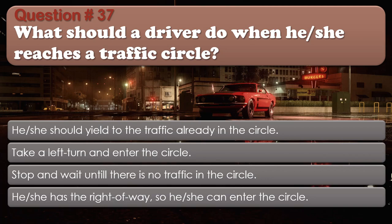Question number 37. What should a driver do when he or she reaches a traffic circle? He or she should yield to the traffic already in the circle. Take a left turn and enter the circle. Stop and wait until there is no traffic in the circle. He or she has the right of way, so he or she can enter the circle. The correct answer is: He or she should yield to the traffic already in the circle.